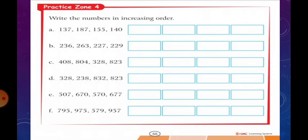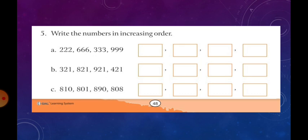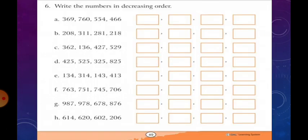Practice zone 4, write the numbers in increasing order. Next, practice zone 5, write the numbers in decreasing order. Next, in your workbook, 5th question, write the numbers in increasing order. Next, 6th question, write the numbers in decreasing order.